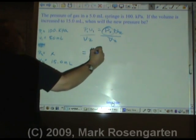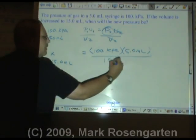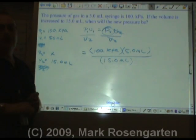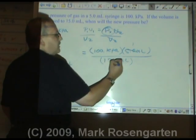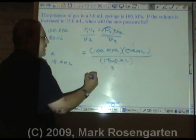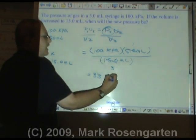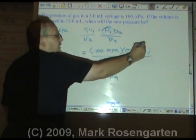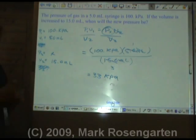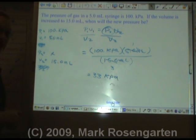Plugging in the numbers: P1 times V1 over V2. You could plug it into a calculator and solve, or you could say 5 and 15 simplifies to 1 over 3. 100 times 1 divided by 3 equals 33 — two sig figs — 33 kPa. I know it's kPa because I canceled out the milliliters, so they're gone. And this makes sense, because if you triple the volume, you'll only have one-third your pressure — indirect relationship.